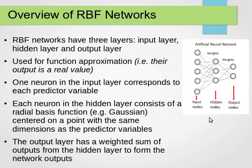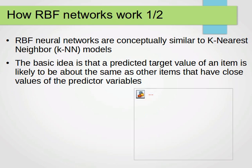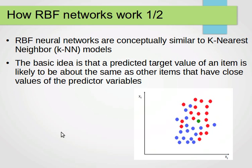The output layer is a weighted sum of the outputs from the hidden layer. The neurons in the hidden layer have Gaussian transfer functions. The way RBF networks work is very similar to the k-nearest neighbor algorithm, which I have explained in one of my other videos.